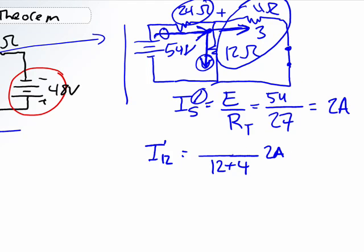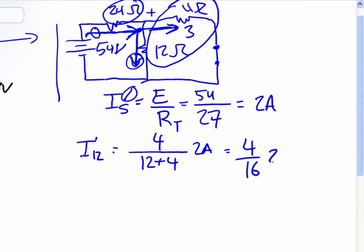And we're looking for the one for the 12, so it's not the one. Basically, 4 sixteenths of 2 amps, so it's 0.5 amps, and it's going down. So we've solved half of the problem here. We know that the 54-volt source is making a current of 0.5 amps go through the 12-ohm resistor.